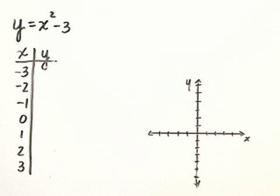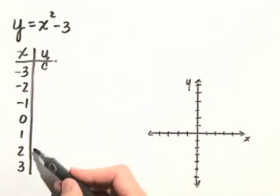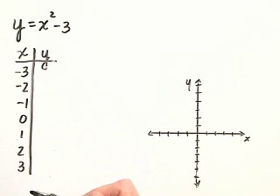We're asked to graph the equation y equals x squared minus 3, and we'll select integers for x, starting with negative 3 and going to positive 3.